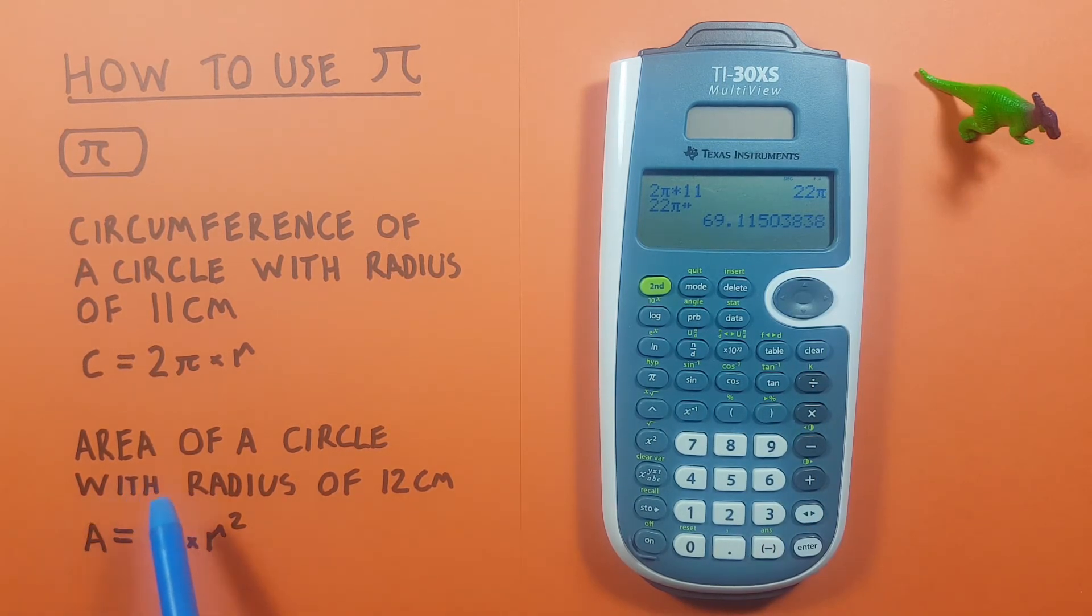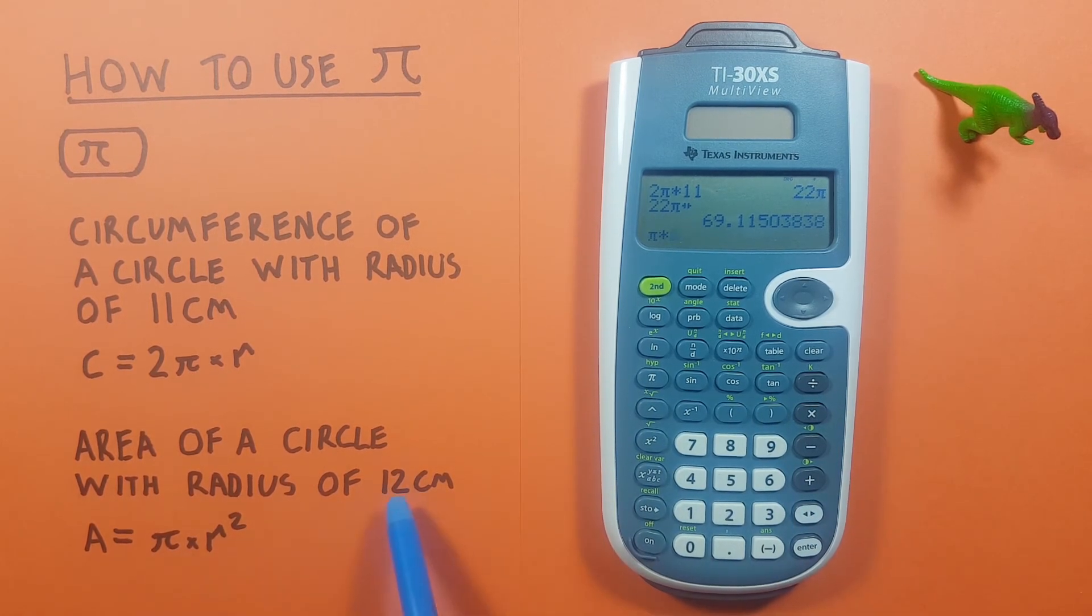Another example: if we wanted to find the area of a circle with a radius of 12 centimeters, we can use the area formula which is π times R². So to do this again we start with π times our R, which is 12 centimeters in this case, and then we square that.